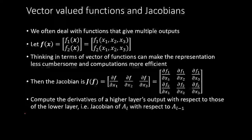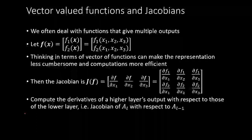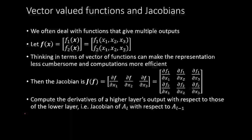Now, what if your inputs are vectors, and consequently your weights are matrices and your biases are also vectors? Let's take a look at how that works. Basically, what we need to do is introduce a concept called the Jacobian.